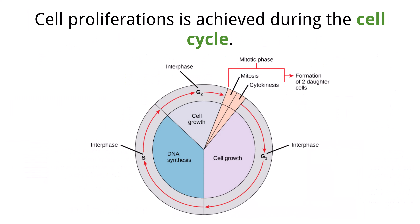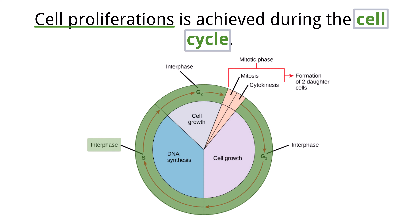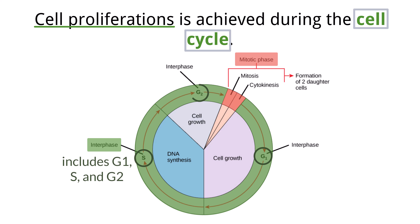The life of the cell can be divided into major phases. We call this the cell cycle. It is during the cell cycle that cell proliferation occurs. There are two major phases to the cell cycle: interphase and the mitotic phase, or M-phase. Interphase is the longest phase and includes three parts: G1, S, and G2.